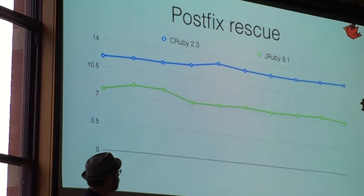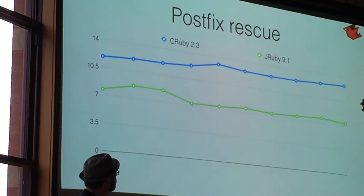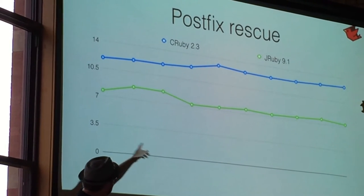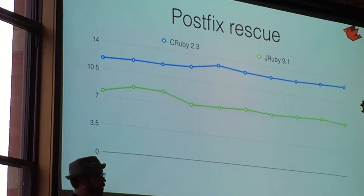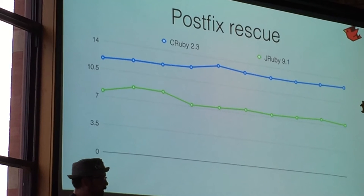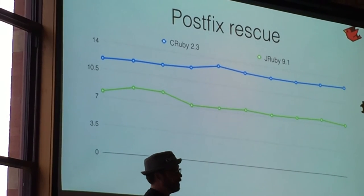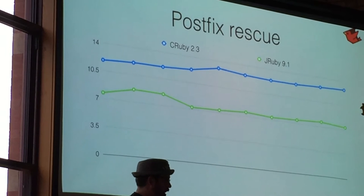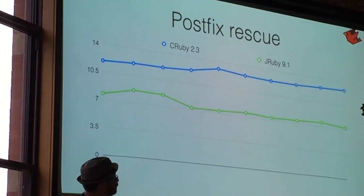So this is the performance of CRuby 2.3 versus 9.1. Significantly better. CRuby still has to create the whole backtrace every time. They don't have any optimization like this. This is essentially the performance of just doing that call many times over. It's significantly faster. The cost of just the exception itself without the backtrace on the JVM is almost free. It's one object. It unrolls the stack and it's much faster.